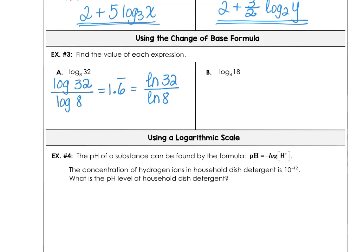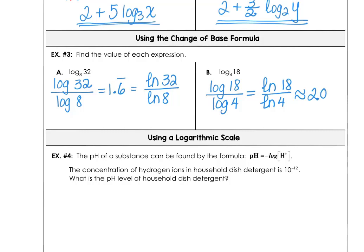On part b, same thing — we want to use log base 10 of 18 divided by log base 10 of 4. Using the common log or the natural log, whichever you prefer, we're going to get the same decimal approximation: 2.085.